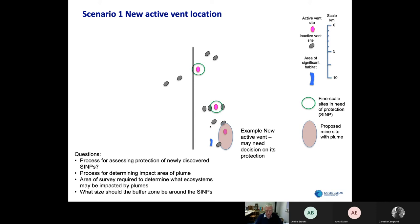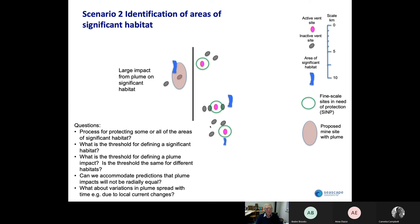On here they're shown as a couple of kilometers radius. There are likely to be areas of coral, sponge, and other VME-type criteria. The ISA doesn't have any VME-type criteria at the moment, but it may wish to establish some to give protection to these types of areas that should be found with additional mapping. What would be the process for protecting some or all of these areas of significant habitat? What is the threshold for defining this type of habitat — surely not one sponge or one coral — but how much would require protection measures to be brought in? What is the threshold for defining a plume impact on this type of habitat, and is the threshold the same for different habitats? In other words, the plume might have a much lesser impact on an active vent site than it does on this type of VME-type criteria.